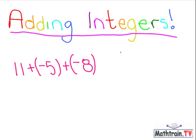The first thing we're going to do is we're going to add negative 5 to 11. How do you do that, Bob? Well, basically, when you're adding a negative number, you're basically just subtracting it. So let's think. 11 minus 5 equals 6.